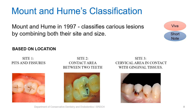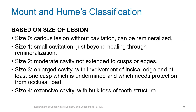Mount and Hume gave a classification in 1997 which classifies caries lesions by combining both their site and size. It has two parts: one based on location and the other based on size. Based on location, there are three sites — Site 1 is pits and fissures, Site 2 is the contact area between two teeth, and Site 3 is the cervical area in contact with the gingival tissues. Coming to the size classification: Size 0 has no cavitation and can be remineralized, and Size 1 is a small cavitation which requires intervention and restoration.